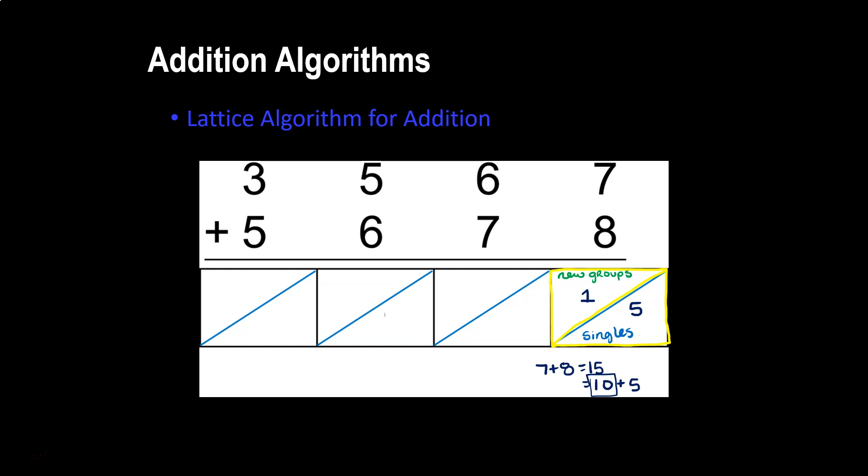It looks like I'm writing 15 in the ones place, and I kind of am. But the lattice is separating the two digits of 15 in a way that's going to make this work out really well. Let's continue. 6 plus 7 is 13. But 13 is a group of 10 and 3 singles, so I'll put 3 in the singles portion and 1 to represent the one group of 10.